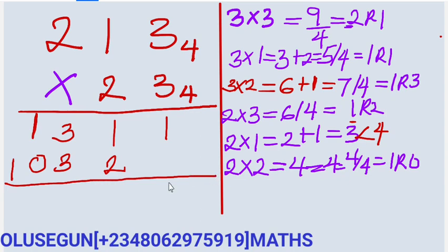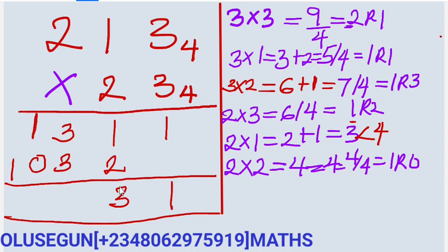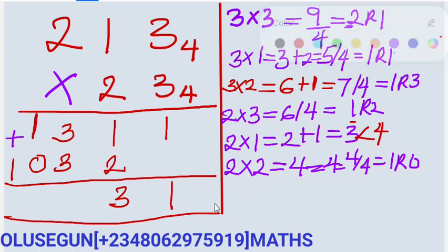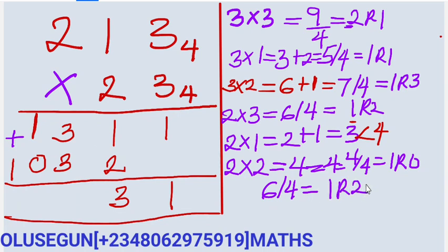Now let's add everything together — this will show us our final answer. 1 plus 1 gives 1, plus 0 gives 1. 1 plus 2 gives 3, which is less than 4, so your answer is 3 here. 3 plus 3 gives 6. Since 6 is greater than 4, you divide by 4: it goes in 1, remainder 2. Write the remainder as 2, and carry the 1.